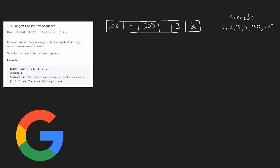Let's solve LeetCode 128, Longest Consecutive Sequence. This is a pretty interesting problem and it's actually been asked by a lot of companies including Google for a coding interview, so I think it's a good problem to understand. We're given an input array of numbers — in this case we have six numbers — and we want to find the longest consecutive sequence. In this case the longest consecutive sequence is 1, 2, 3, 4. It doesn't matter what order the numbers appear in the input array; we just want to know the longest consecutive sequence we can make from the input array.